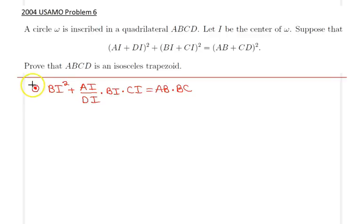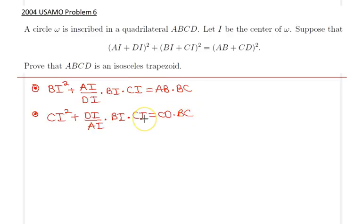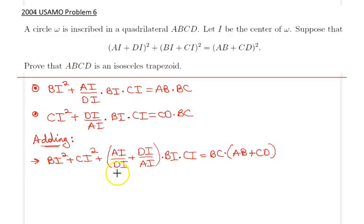So this is what we have so far. The rest of the problem is essentially algebraic. Before proceeding, notice that by symmetry we can also derive a similar result: CI² + (DI/AI) · BI · CI = CD · BC. I will now add these two results together.